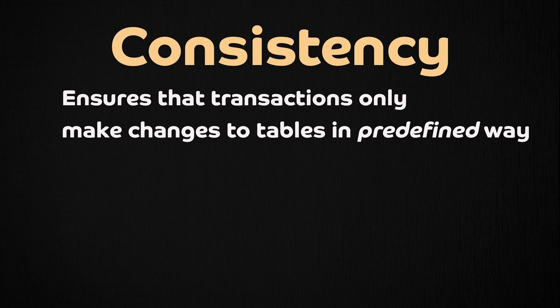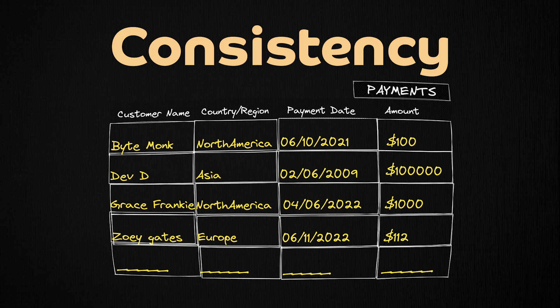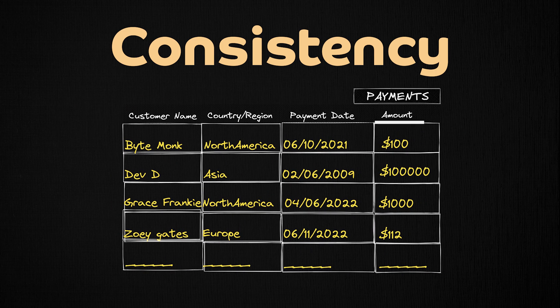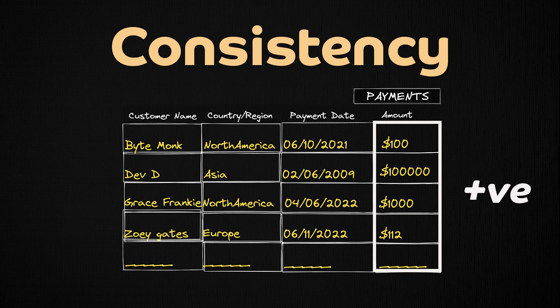Consistency ensures that transactions only make changes to tables in a predefined way. By predefined ways, I mean data integrity constraints must be followed. For example, in this payments table, I have a column called amount. One of the constraints could be that the amount should always be positive — it cannot become negative. And that is what consistency ensures.